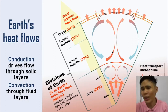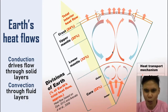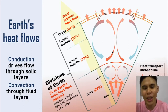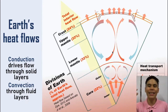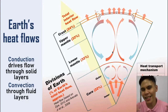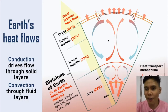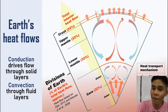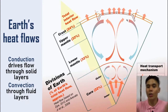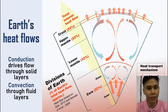Now, the mantle is weird. It's solid — we call it solid — but over geological time, it technically sort of acts as a fluid. So it still uses convection currents. These convection currents convey the energy to the crust, and then lots of stuff happens to the crust.